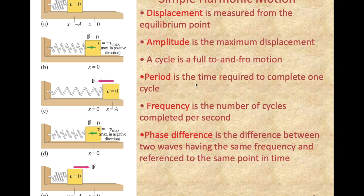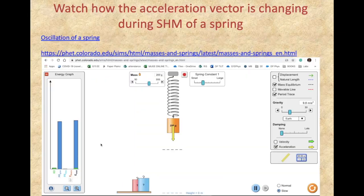A time period is the time required to complete one cycle. Frequency is the number of cycles completed per second. Phase difference is the difference between two waves having the same frequency referenced to the same point in time — we will return to this later in the unit, so I'll just put a pin on this for now.